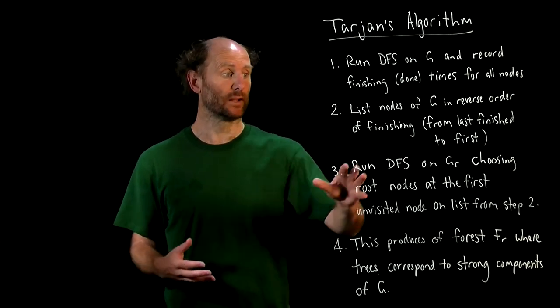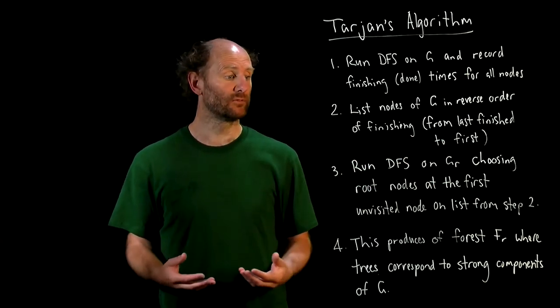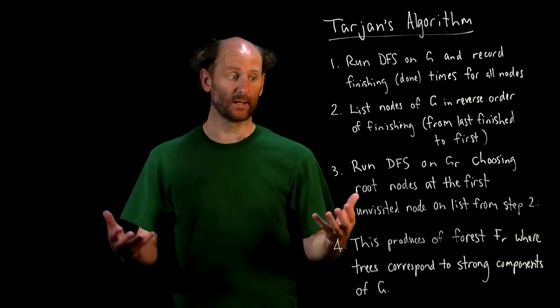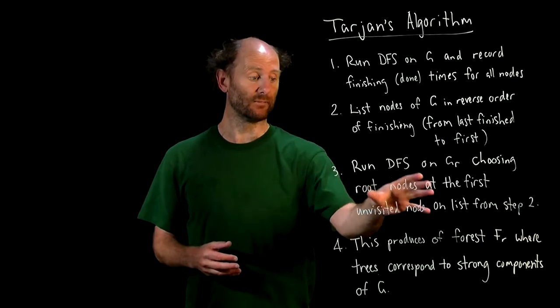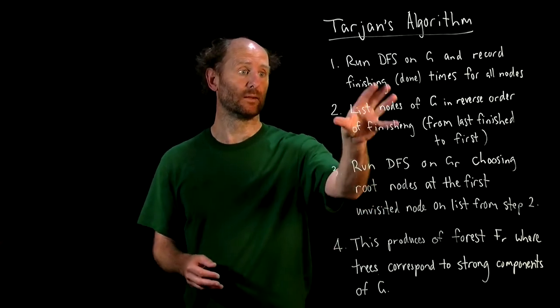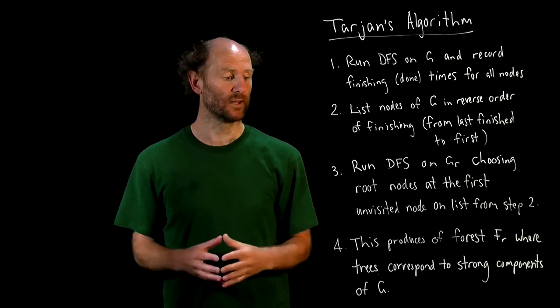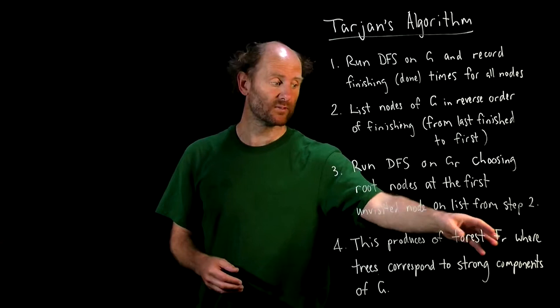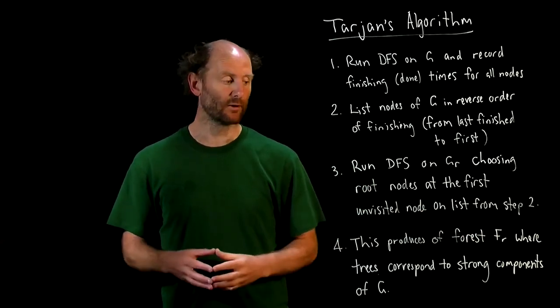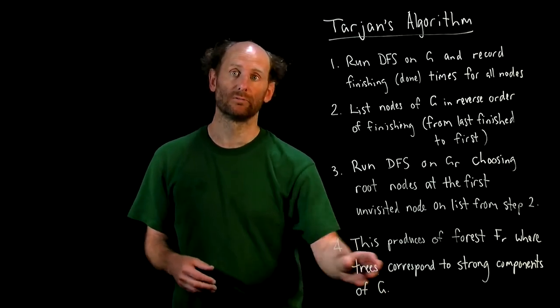Then we'll run a depth first search on the reverse of G, and we'll choose the root nodes, the starting nodes, the nodes which we call DFS visit, at the first unvisited node on the list from this step that we just constructed here. And this will produce a forest, let's call it FR, where the trees in that forest correspond exactly to the strong components of G.